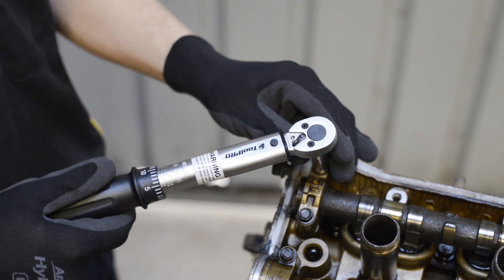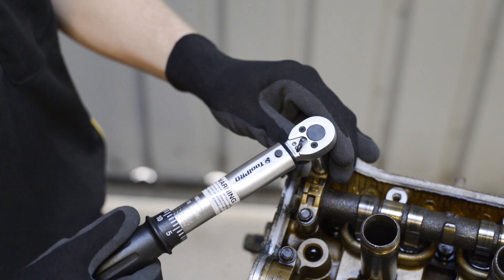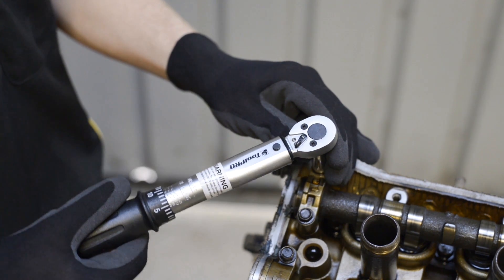Torque wrenches are most accurate around the middle of their torque range, so choosing the correct size for the job is very important.